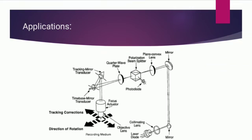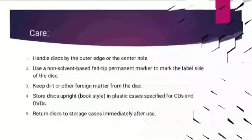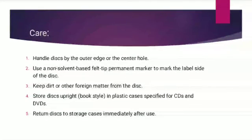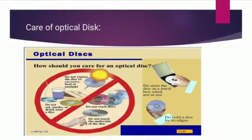The optical disc reading process involves tracking correction, direction, rotation, mirror, playing, convex lens, polarization beam, quarter wave plane, photodiode, focus, activated lens, laser diode, objective lens, and mirror. To care for optical discs, handle them by the outer edge or center hole, use a non-solvent felt-tip permanent marker to mark the label side, keep dirt away from the disc, store discs upright in plastic cases specified for CDs and DVDs, and return them to storage cases immediately after use. Do not expose discs to excessive heat or sunlight, do not stack discs, do not touch the underside, and do not eat, smoke, or drink near a disc.